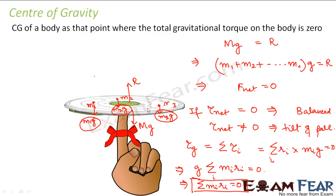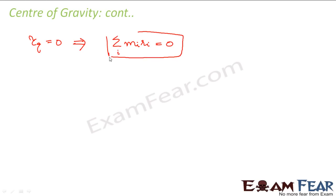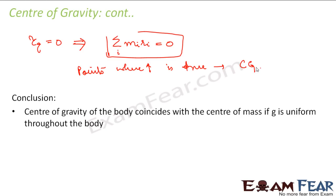Now if we assume that the value of g is the same at all points — which we generally assume — then we can say that the center of gravity always coincides with the center of mass. So center of gravity coincides with center of mass if g is uniform throughout the body, meaning if the value of acceleration due to gravity does not change. We generally assume that the value of acceleration due to gravity on the surface of the earth is the same, so in that case center of gravity coincides with center of mass.